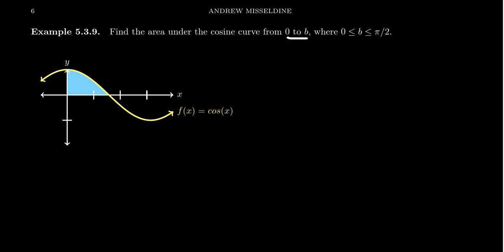Well, what if we leave b as some unknown? If you wanted to do that, we're looking for the integral from 0 to b of cosine of x dx.